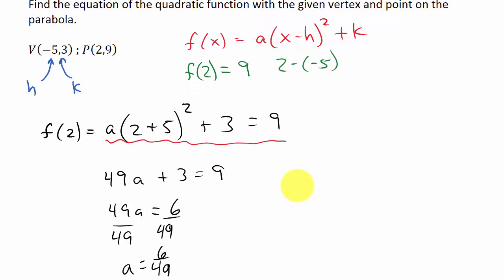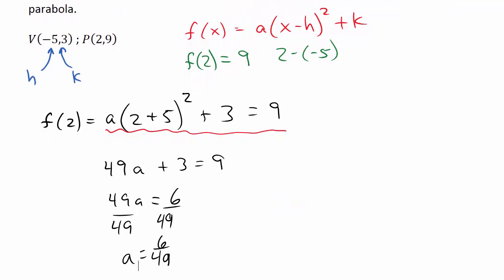So now, when we plug this back in, my final answer, I'm going to get f of x is equal to 6 over 49 times x as our variable. And then when I plug the negative 5 in for h, that's minus a negative 5. So that would be plus 5 squared. And then plus k. So plus 3.